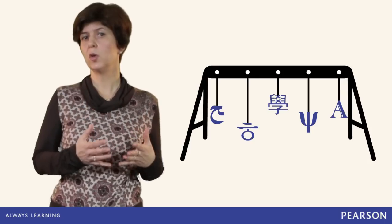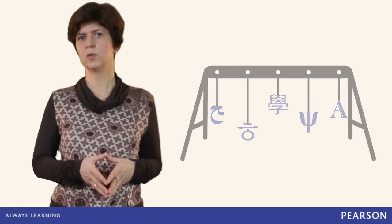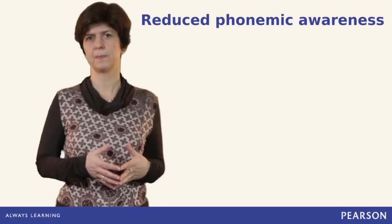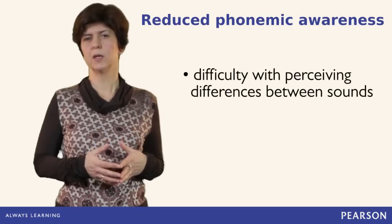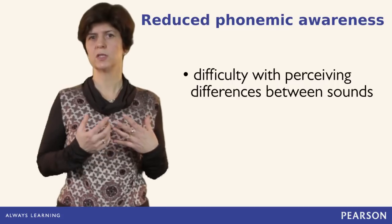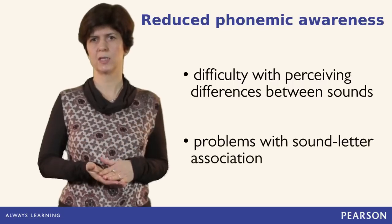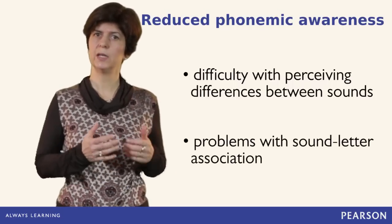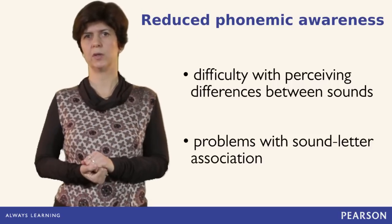In addition to lower working memory capacity, another hurdle for dyslexic students is what is called reduced phonemic awareness. These students often have difficulties perceiving subtle differences between sounds, such as long and short vowels, and learning sound-letter associations. This causes difficulties in reading and spelling, both in their first language and in foreign language learning.